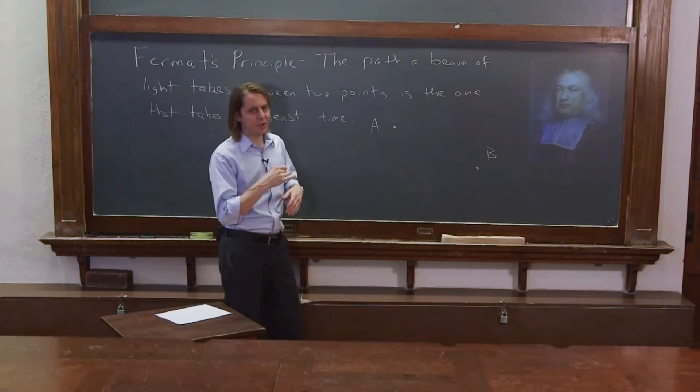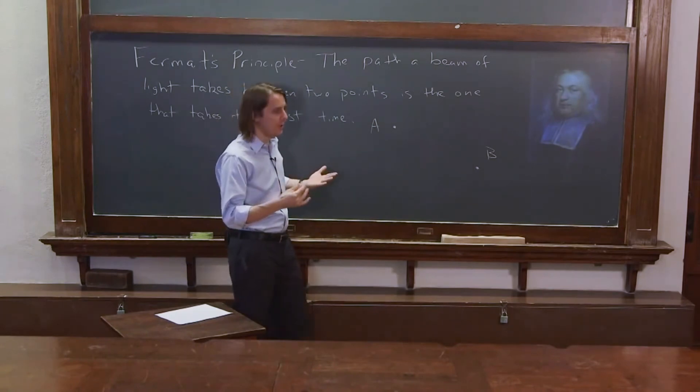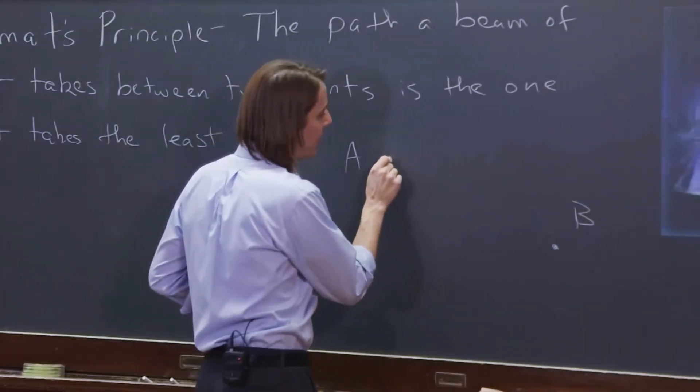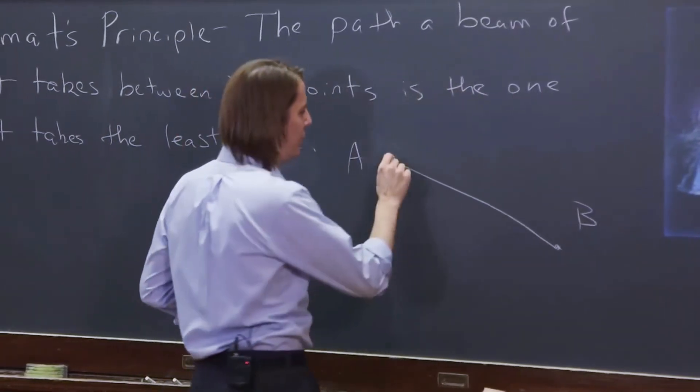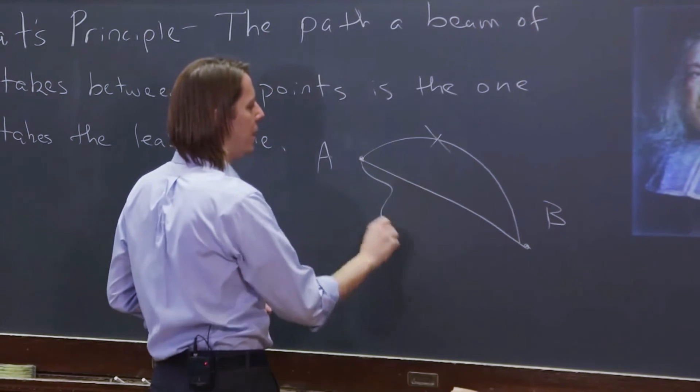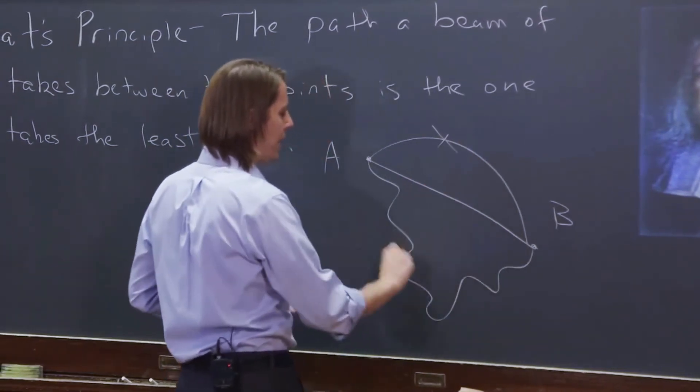And if you assume light travels at a constant speed, travels at the speed of light, then the least time would be the least distance. So the light will go like that. The light will not go like that. And it will not go like that.